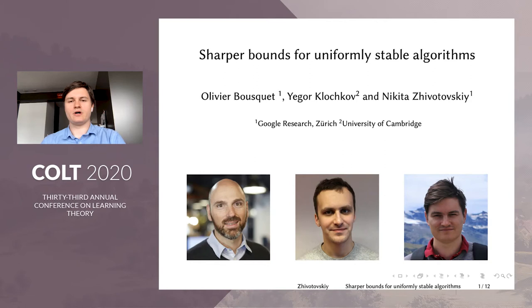Sharper bounds for uniformly stable algorithms. This paper is by Olivia Bousquet, who did Google Research in Zurich, Igor Klochkov, who is at the University of Cambridge, and Nikita Zhivotovsky, who is also at Google Research in Zurich and who is presenting this work.